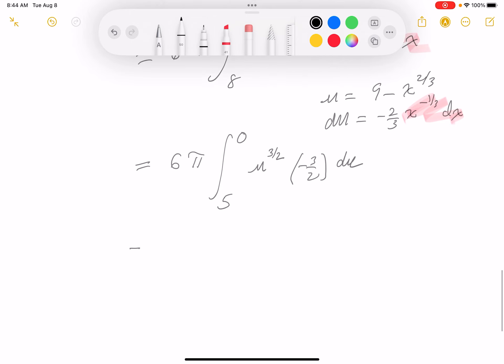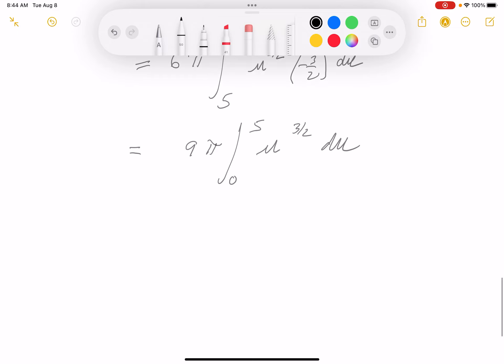I think I'm ready to do this. I'm going to pull the constant out again. And since it's negative, I'm going to reverse the limits of integration from 0 to 5. So that's going to be 9 pi, u to the 3 halves du. I'm ready to do the integration now. 9 pi u, increase it by 1, that's 5 halves. And then I have to divide by 5 halves or multiply by 2 fifths. Limit of integration go from 0 to 5.